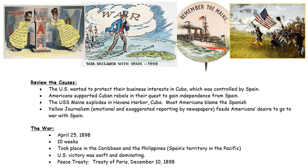So the war starts on April 25th, 1898. It only lasts 10 weeks — a very quick, decisive, and very surprising victory on behalf of the United States. The peace treaty was signed in Paris on December 10th, 1898. Fighting had stopped in August, but the official treaty signifying the end of the war was signed in December of that year.